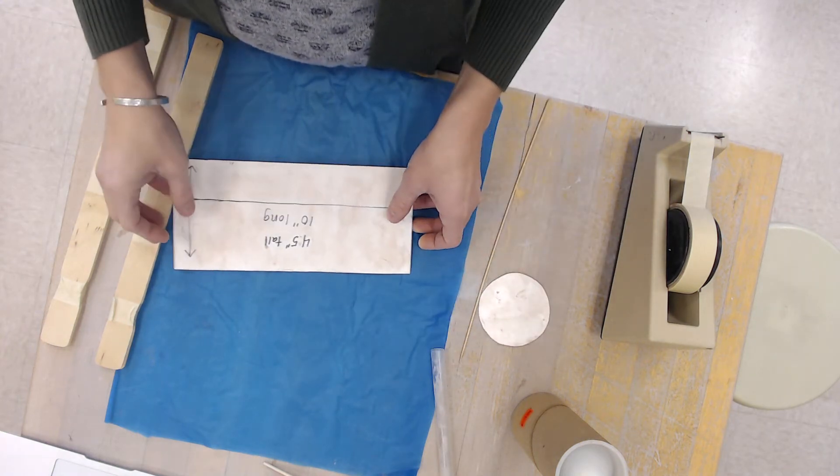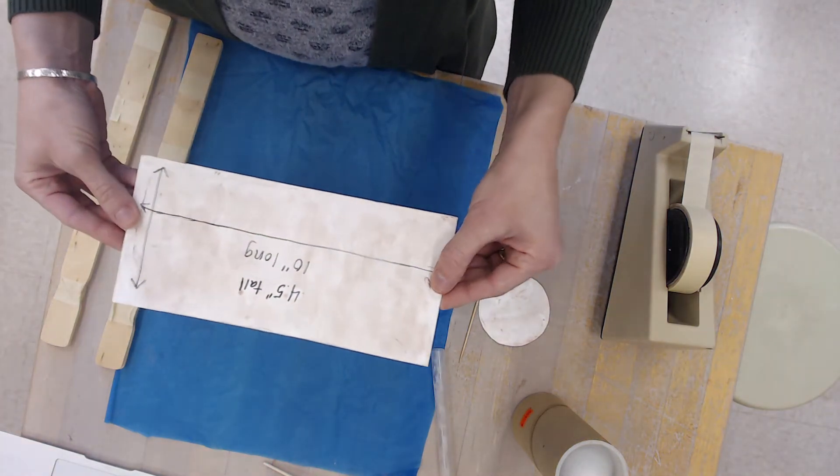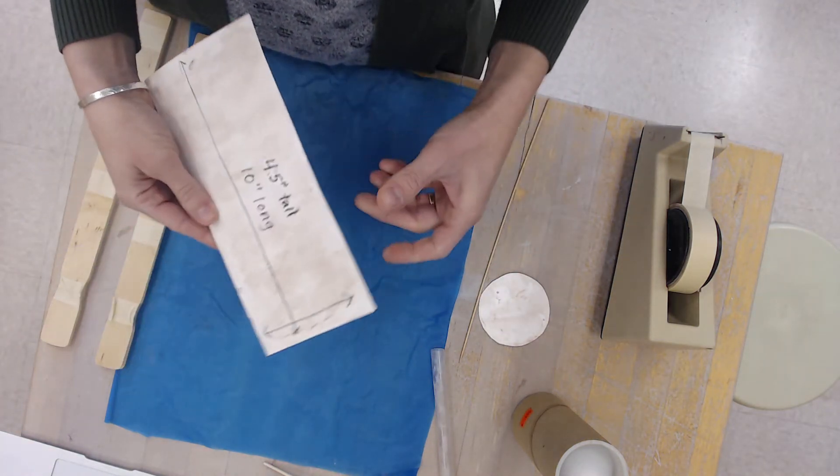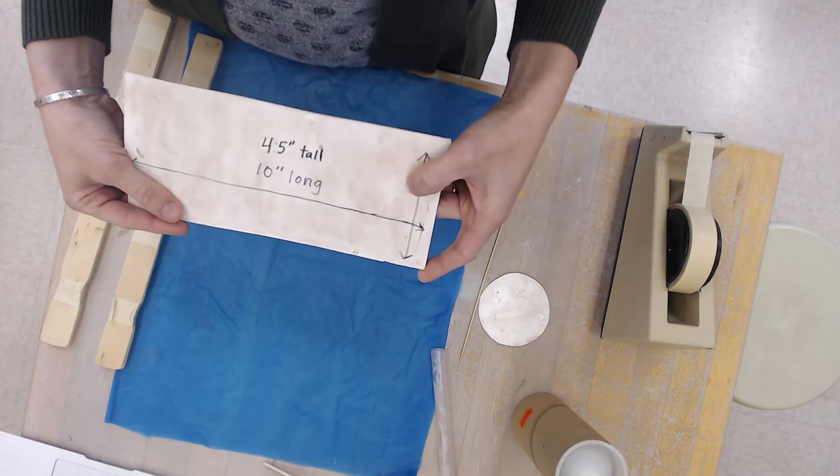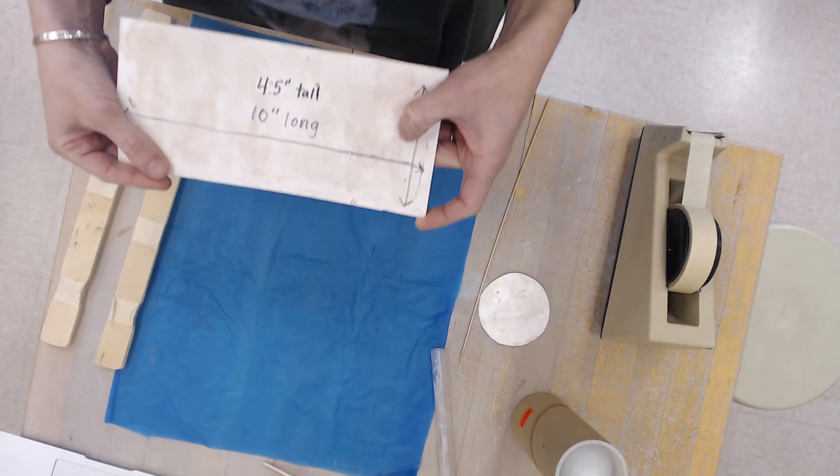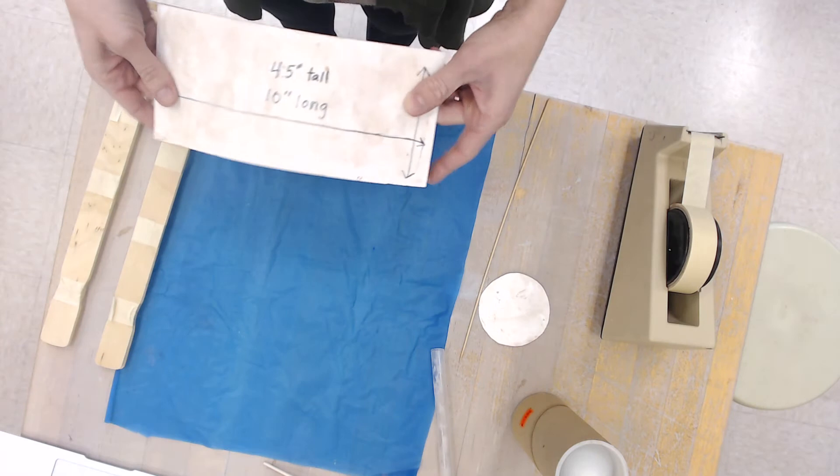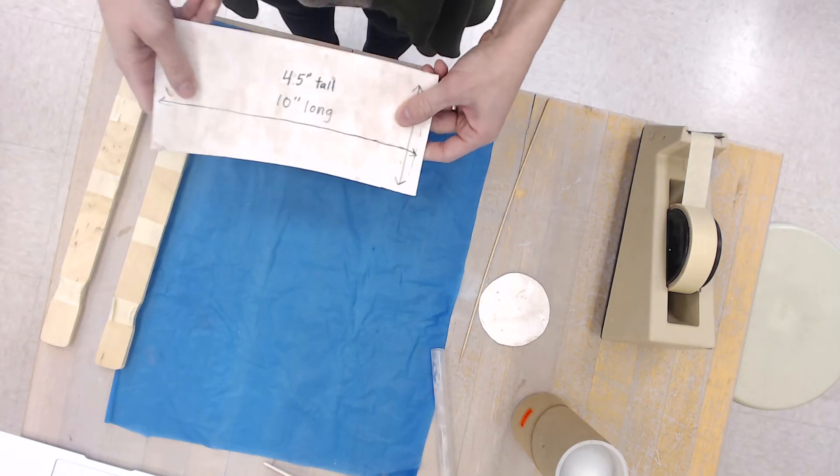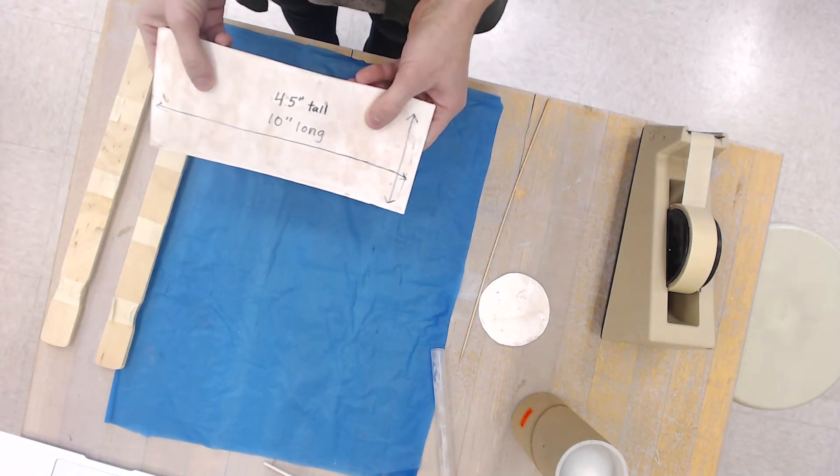And then you have your flexible cardboard or paper that is 10 inches long by four and a half inches tall. And again, this is flexible and this is called a template. It's going to help me get a really nice clean shape.